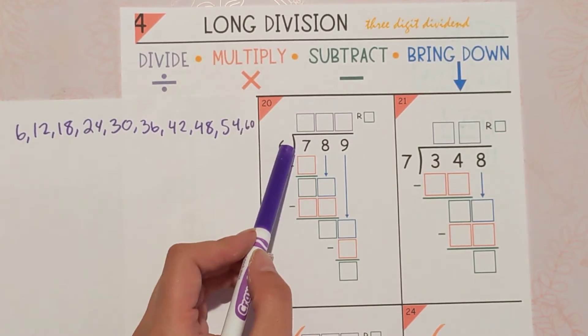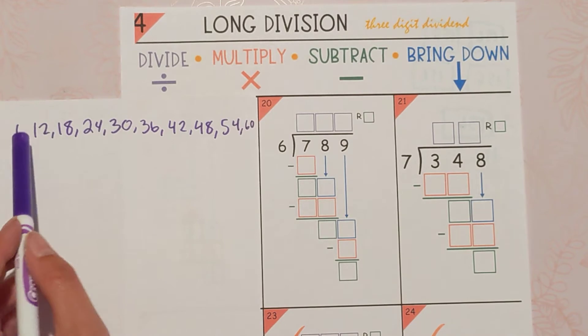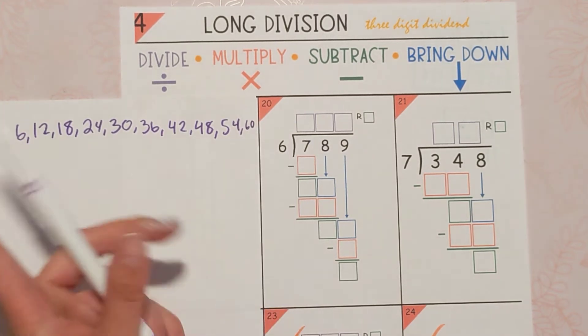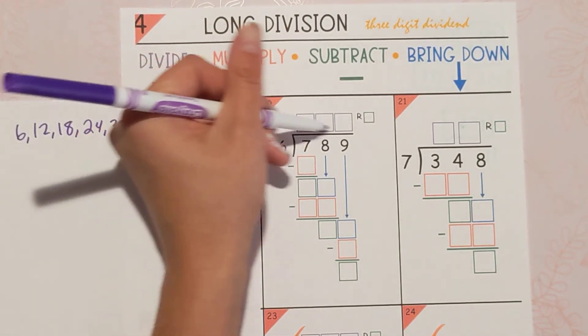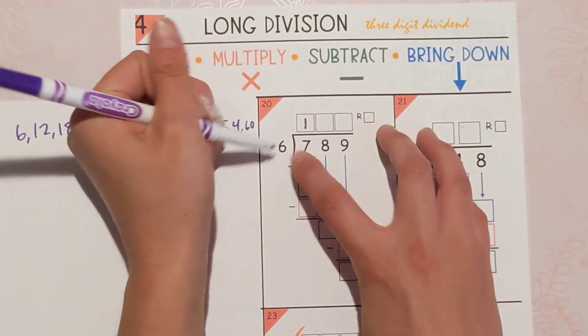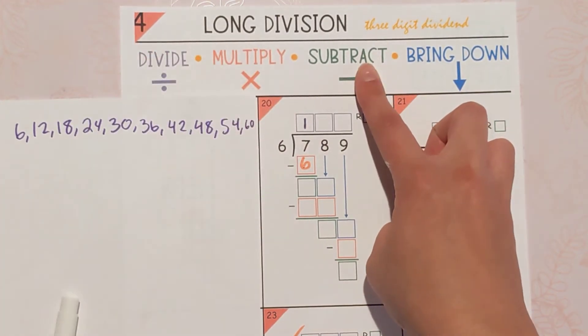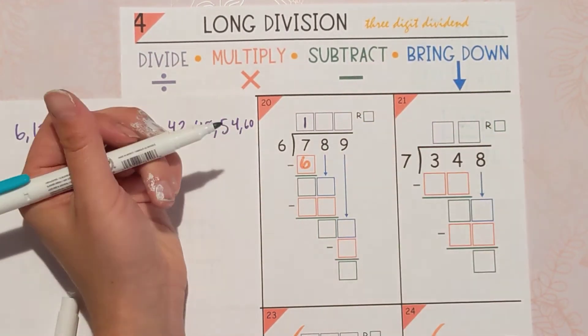So, 7 divided by 6, or how many times can 6 fit into 7 without going over it? Just one time. Put the 1 up here. All of our division goes on the top. Multiply that right back. So 1 times 6 is 6. Now we're going to subtract 7 minus 6.